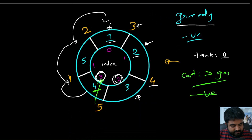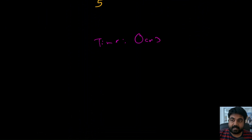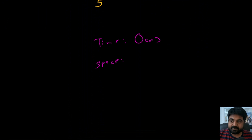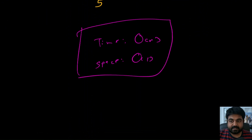For time complexity, using the greedy approach this runs in O(n) time. For space complexity, we are not using any additional space, so it is O(1). Now let's look at the coding solution.